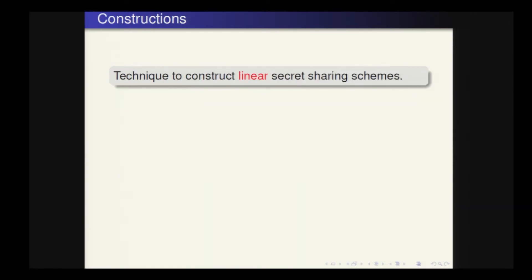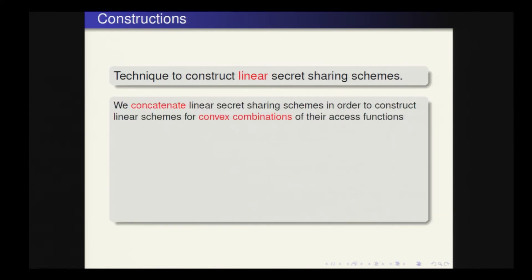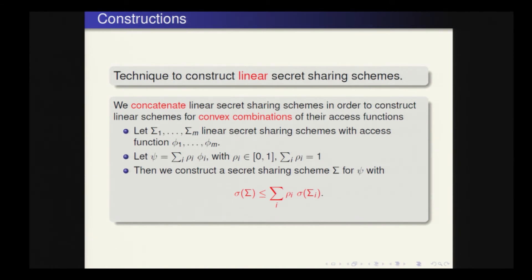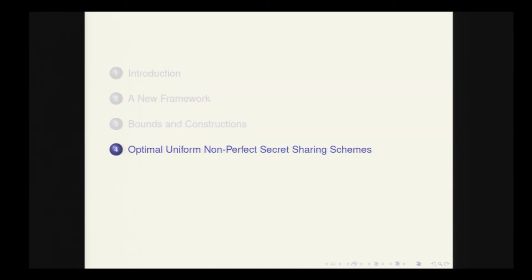We also present ways to construct schemes. We concatenate linear secret sharing schemes to construct linear schemes for convex combinations of their access functions. That is, given linear secret sharing schemes σ₁, ..., σₘ with access functions φ₁, ..., φₘ, and given ψ, a convex combination of those access functions, we can construct a secret sharing scheme for ψ for which the information ratio is at most the convex combination of the information ratios. We apply these general techniques — lower bounds and constructions — to the family of uniform non-perfect secret sharing schemes.